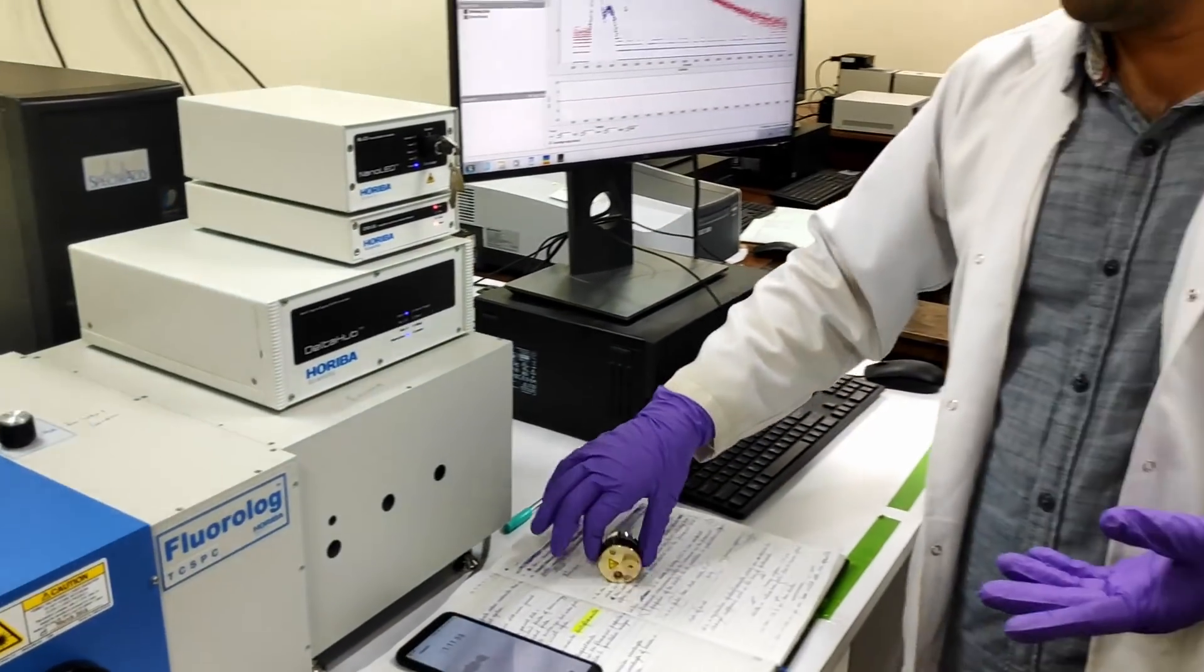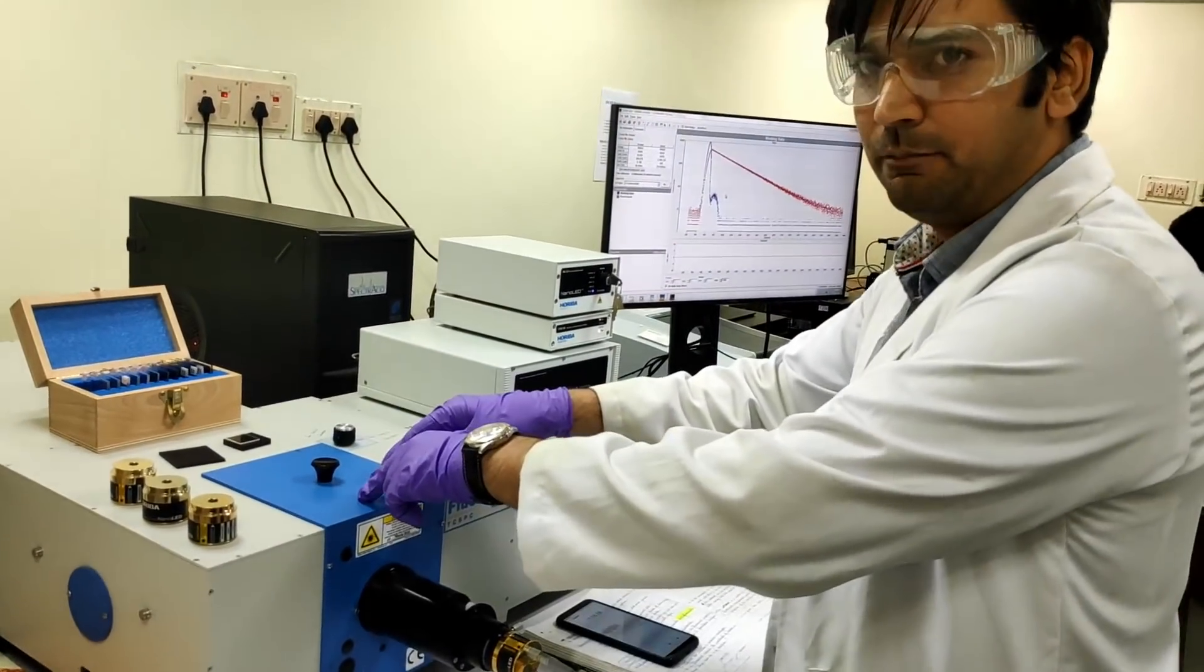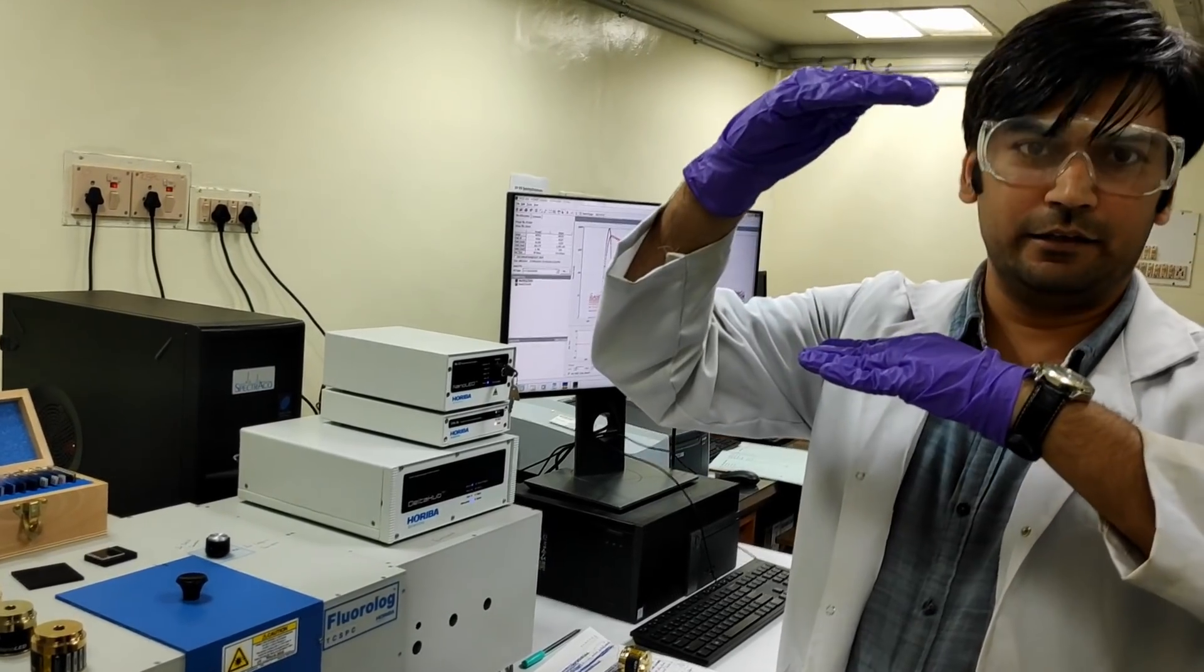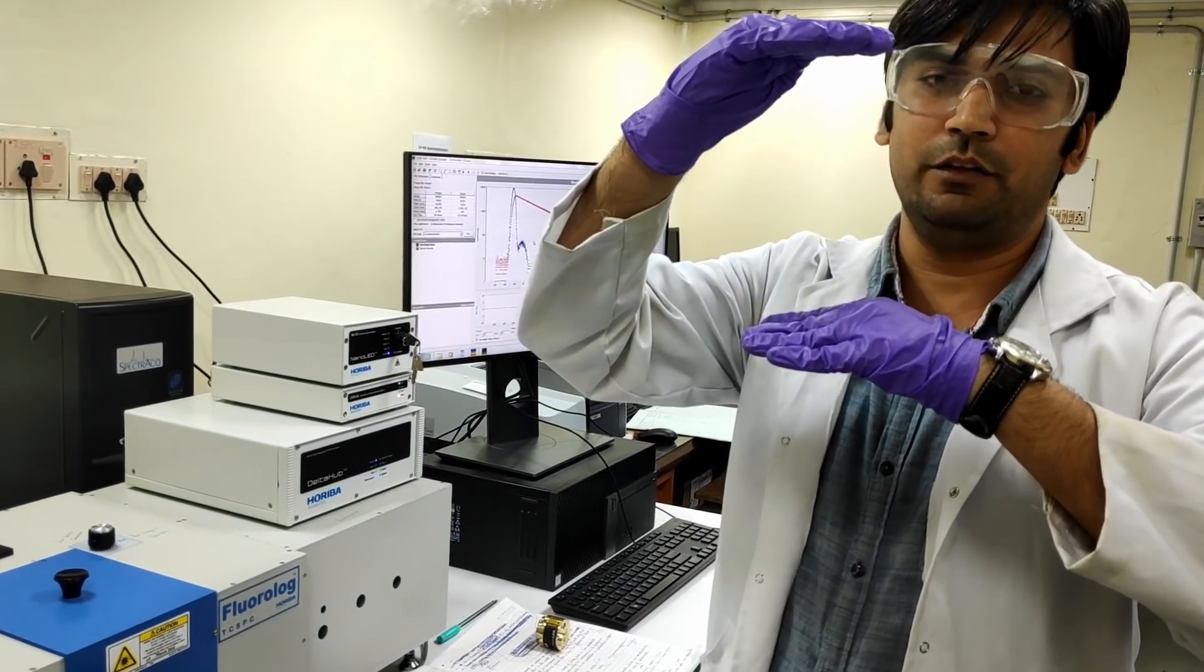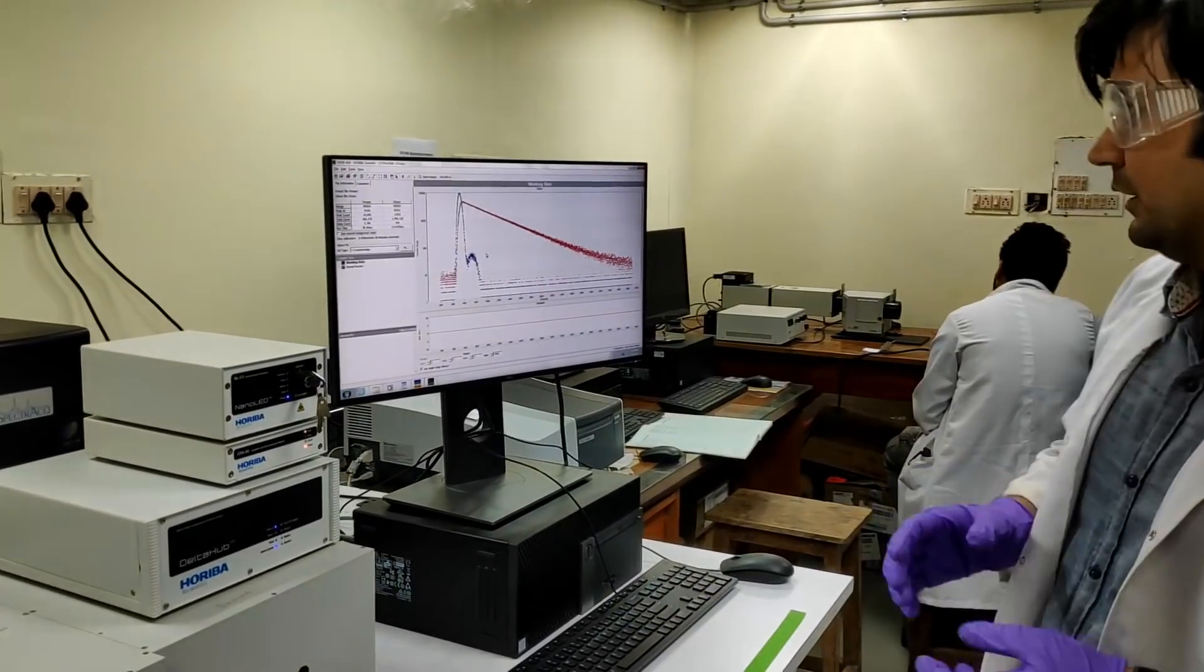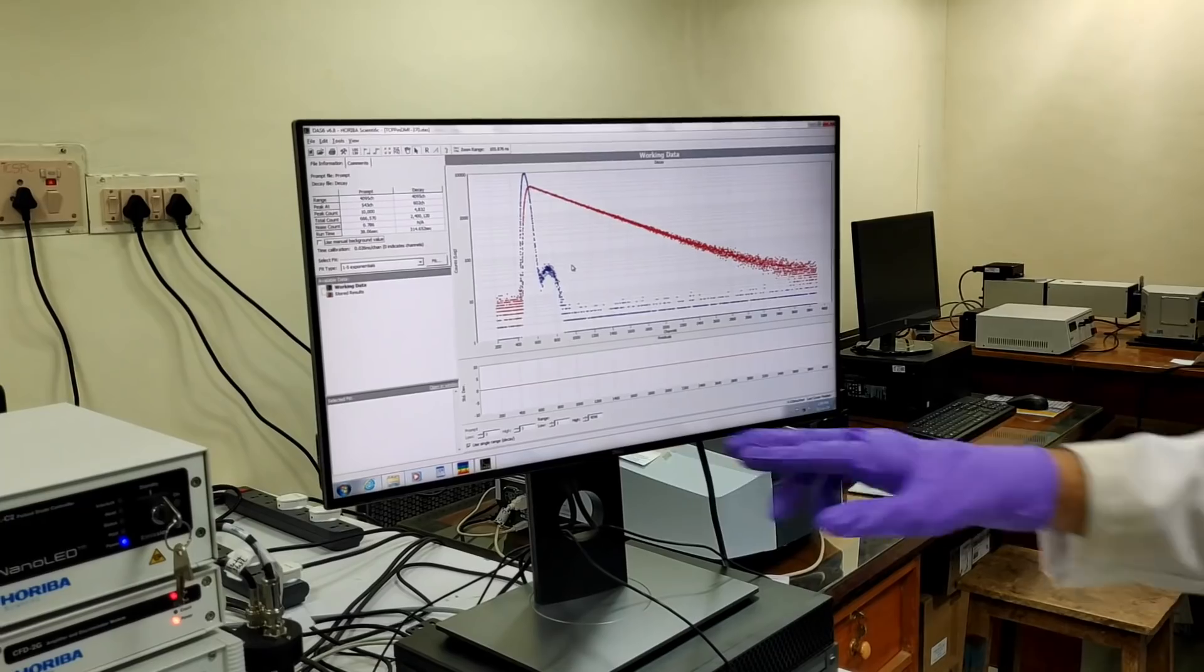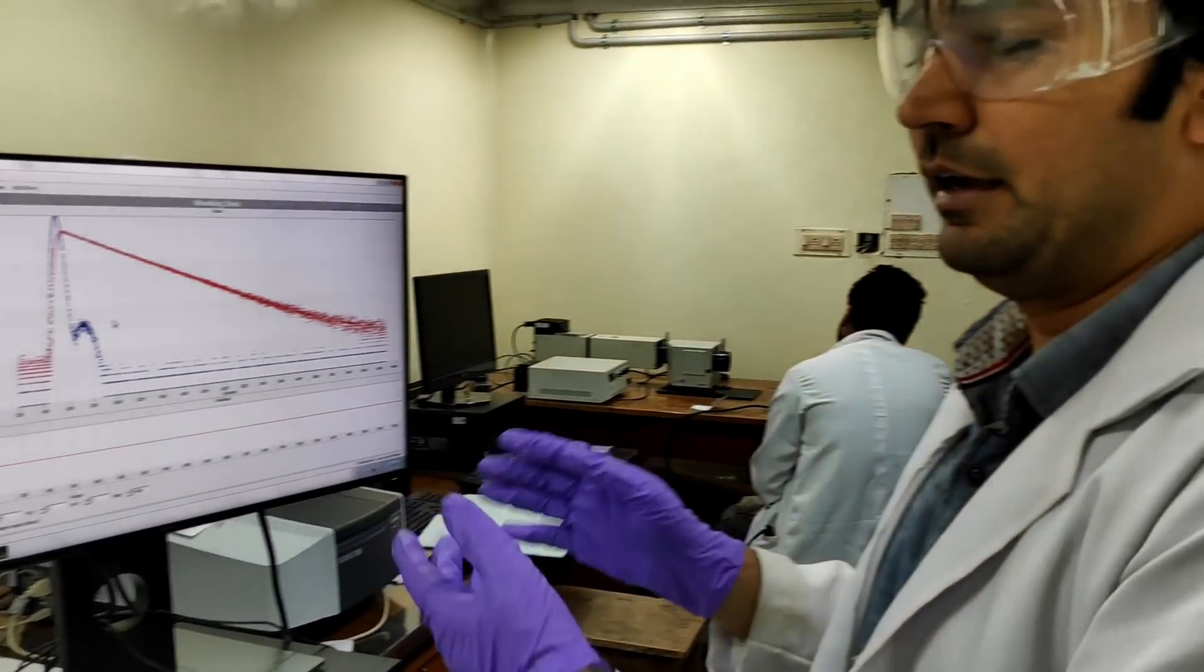We also have filters to cut the wavelength and the intensity of the light reaching to the detector. So talking about the working principle, we incident the monochromatic light on the sample, which will jump the electron from the ground state to the excited state. So this equipment measures for how long the electron will stay in the excited state before coming back to the ground state and emit the fluorescent light. This is how we get our excited electron decay data for any specific material that we are analyzing.